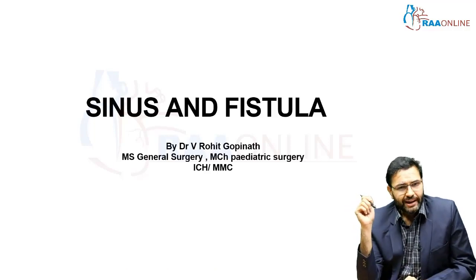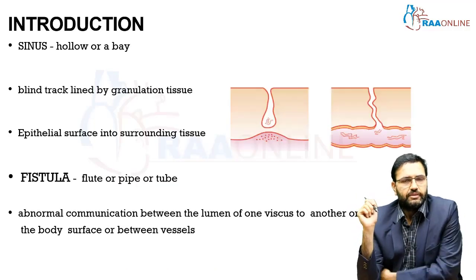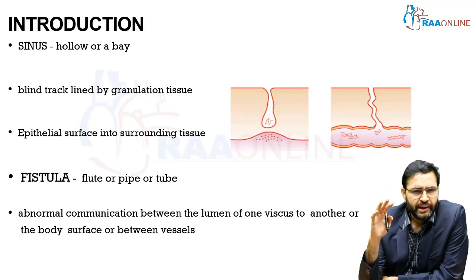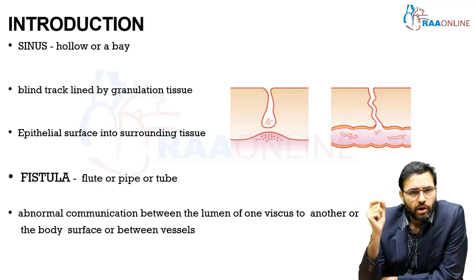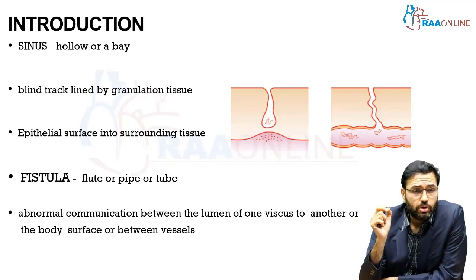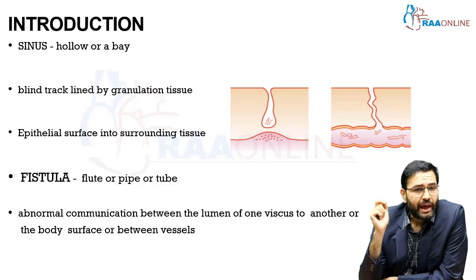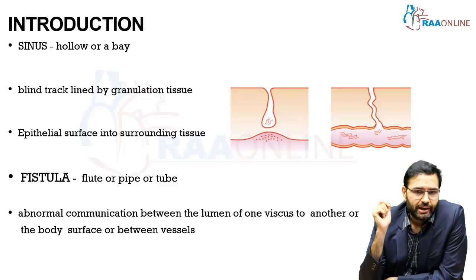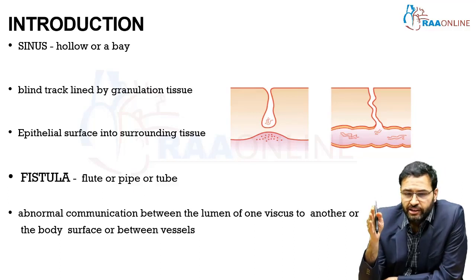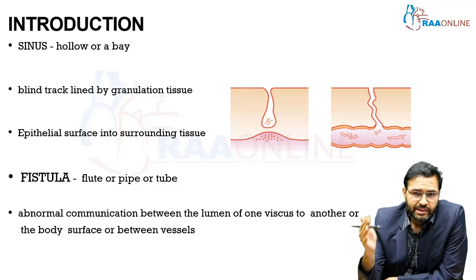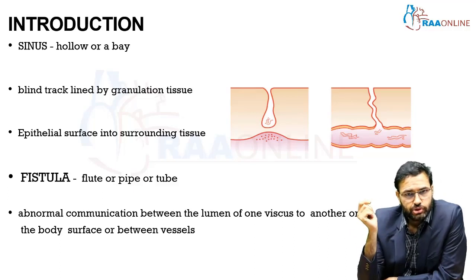So what exactly is a sinus? Sinus is a terminology which denotes a hollow or a bay. It is a blind tract which is lined by granulation tissue and it extends from an epithelial surface into surrounding tissue.